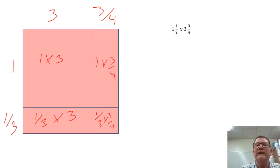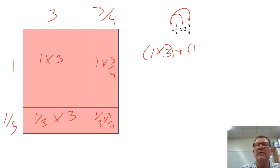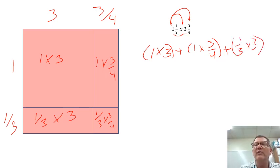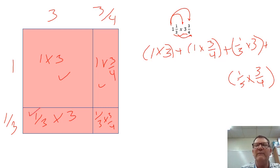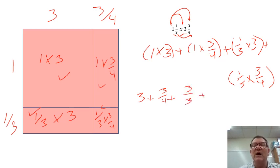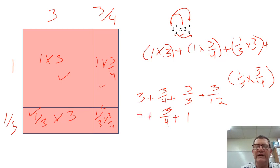Looking at our distributive model, I'm going to write: one times three, plus one times three-quarters, plus one-third times three, plus one-third times three-fourths. You'll notice that matches — there's my one-third times three, my one-third times three-fourths, my three times one-third, and my one-third times three-fourths. It matches the area. So: one times three is three, plus one times three-fourths is three-fourths, plus one-third times three is three-thirds, plus one-third times three-fourths is three-twelfths.